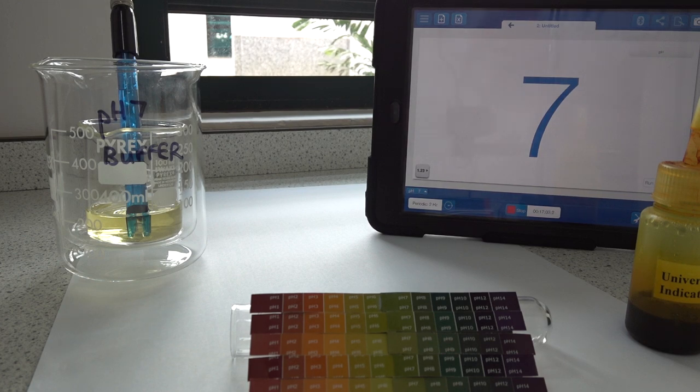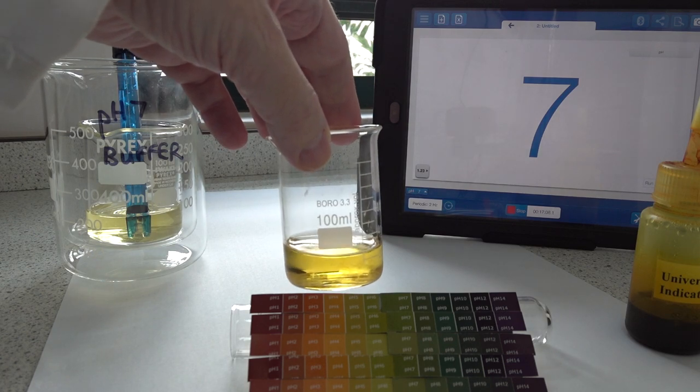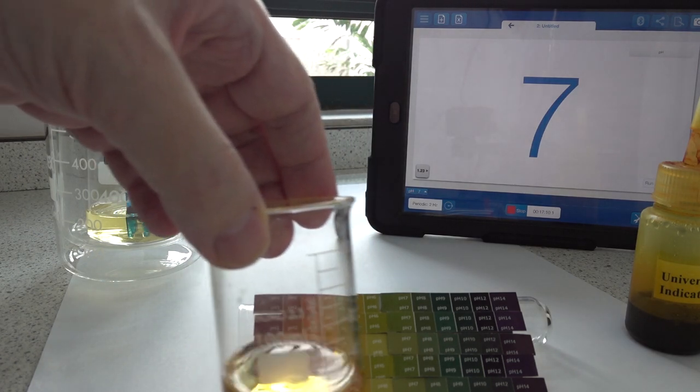So let's have a look at the solutions that we've got. Again we've got this solution here is our first solution. It's giving a yellow color which seems to be about pH 4.